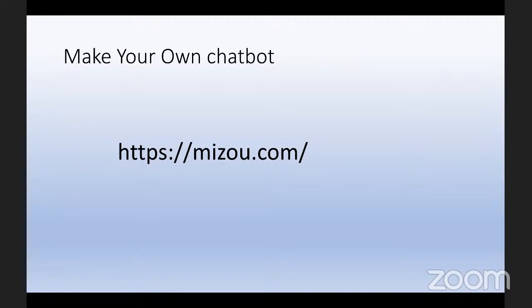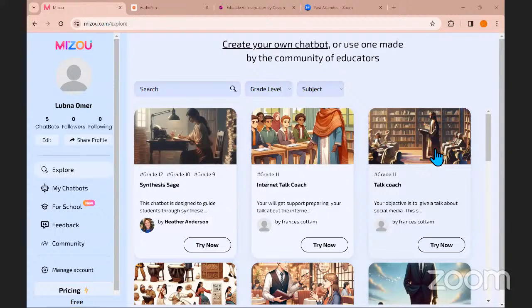My favorite one is mizu.com. I want to go to the actual website to show how it works because I find this is possibly the best use of AI at the moment. When you go there, you sign in and click 'create your own chatbot.' Then it comes up with a custom option where you can select features. I'll show you this neat feature.